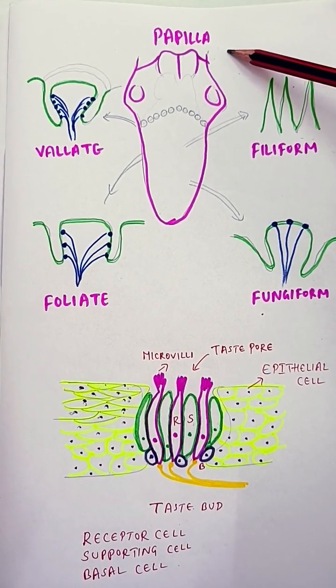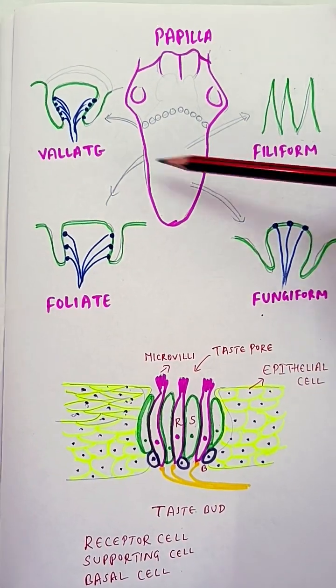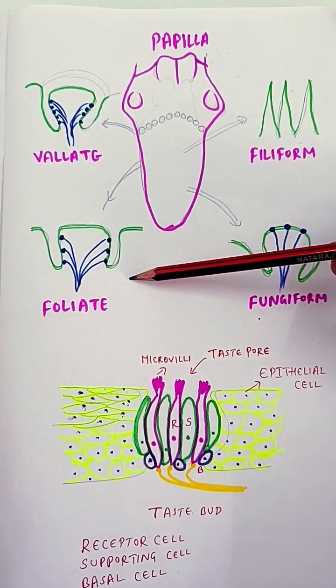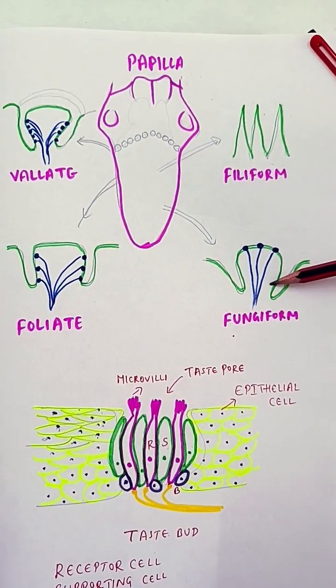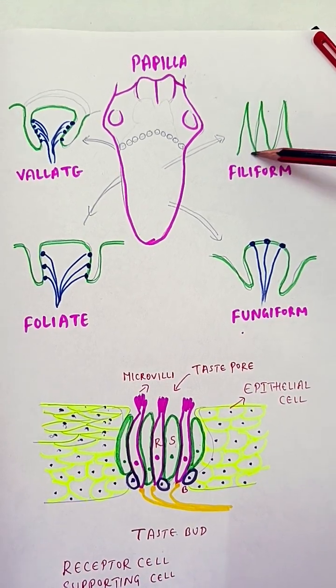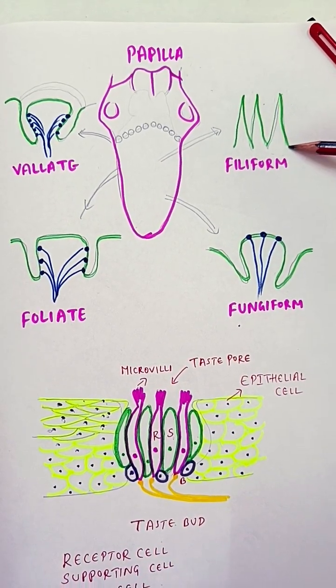Taste buds are located on the surface of the papilla. We have four different types of papillae: vallate papillae, foliate papillae, filiform papillae, and fungiform papillae. Filiform is a filamentous-like structure which doesn't have any taste buds.